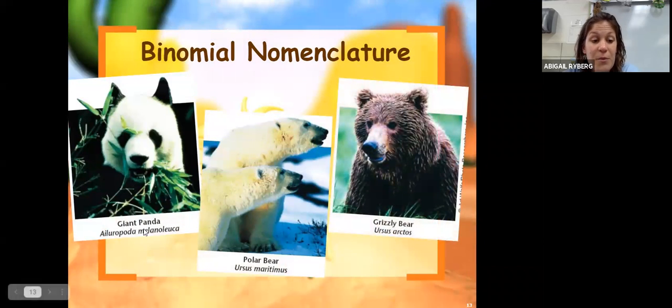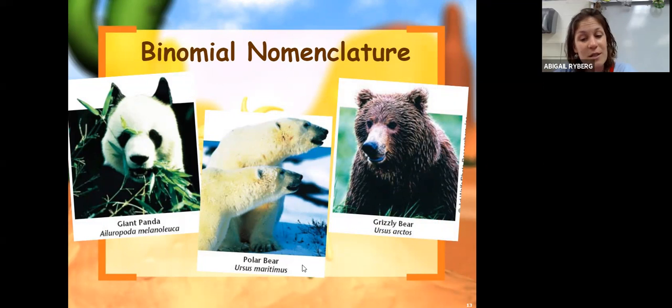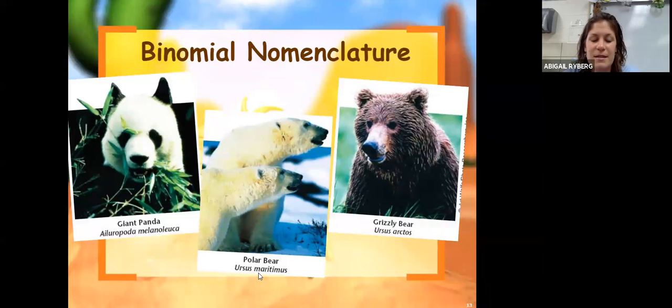Here are three more examples of common names. We have the giant panda, the polar bear, the grizzly bear, and underneath is their scientific name. You'll notice that there is a genus and a species for each one of them. They are all in italics, the genus is capitalized, and the species is not.